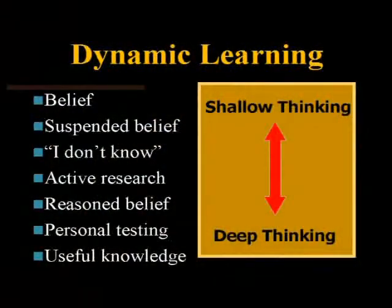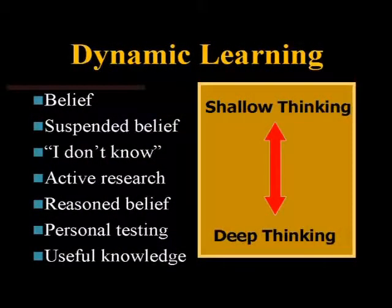So to summarize dynamic learning: belief is very shallow. You work with it, you suspend your belief, realizing maybe there's something more here. Then you say I don't know — I don't know what works, I don't know what to believe — and you do some active research. From that, you have a reasoned belief. Then you can test it personally, and then you have useful knowledge. If it's not useful knowledge, what's the point? So try to find ways to test information, test your beliefs — find out: this doesn't work, this does.